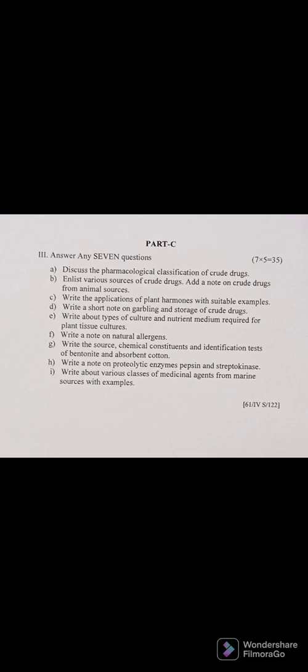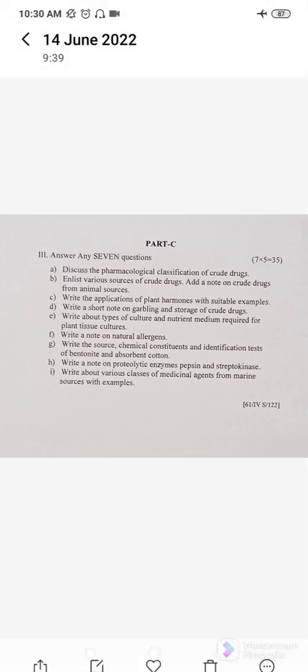Part C Question 9: Write a note on various classes of medicinal agents from marine sources with examples — like Era C, Era A, urokinase, and others. Marine sources provide anti-cancer, anti-inflammatory, anti-viral, and anti-bacterial agents. Examples from marine sources include marine sponge, carrageenan, and alginic acid. Write activity-wise — for antimicrobial, what are the examples; for anti-inflammatory, what are the examples; for anti-cancer, what are the examples. It has been nicely covered in the book, so write accordingly.